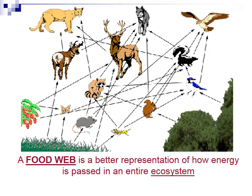Then we get into something a little more complicated — a food web. If you look at nature and who eats what, it's not a simple food chain, it's a food web. It's a much better representation of how energy is passed in an entire ecosystem. Look at this bird here — the energy going to the bird means it's eating some seeds, some grasshoppers, and some berries. It's getting energy from a lot of different places. And here you have this hawk up here getting energy from the squirrel, the blue jay, and the mouse — basically eating whatever it can get hold of.